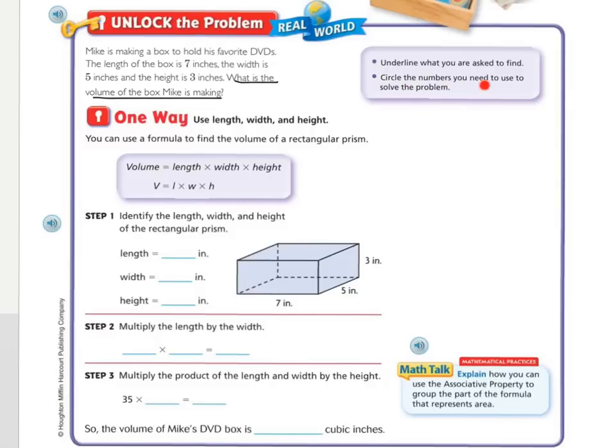Next it says to circle the numbers you need to use to solve the problem. Well we need the 7 inches for the length, the 5 inches for the width, and the 3 inches for the height. One way to solve the problem: you can use a formula to find the volume of a rectangle. Volume equals length times width times height. So V equals L times W times H.